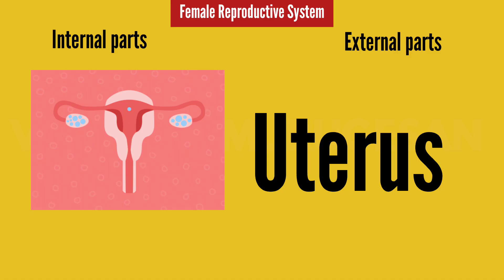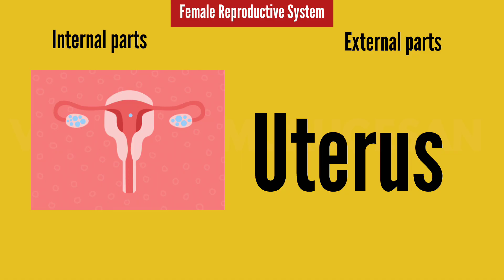That process is called implantation. In zygote formation it is called fertilization. Fertilization is confirmed by the implantation in the uterus. So, fertilization occurs in the fallopian tube, while implantation occurs in the uterus.